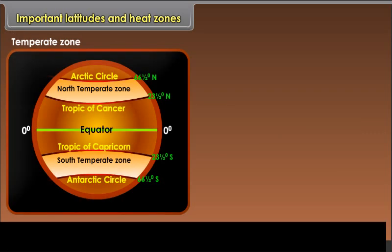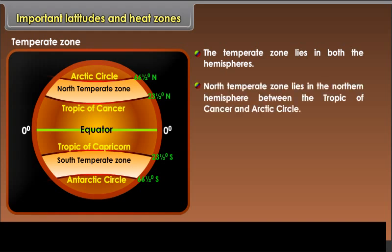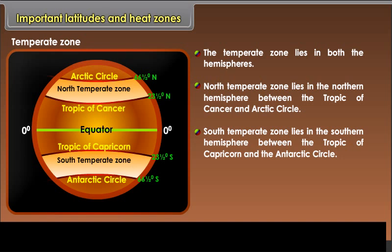Temperate zone: The temperate zone lies in both the hemispheres. The north temperate zone lies in the northern hemisphere between the Tropic of Cancer and the Arctic Circle. The south temperate zone lies in the southern hemisphere between the Tropic of Capricorn and the Antarctic Circle. These zones are neither too hot nor too cold.